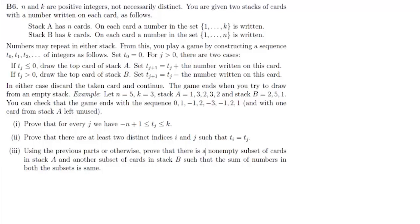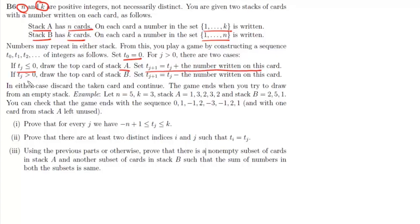Now the sixth question: we have two positive integers n and k, and two stacks — stack A having n cards and stack B having k cards. Stack A has cards from the set 1 to k and stack B has cards from the set 1 to n. T_0 is 0. If T_j is less than or equal to 0, we draw a top card from stack A and T_{j+1} equals T_j plus the number on that card. If T_j is greater than 0, we draw a top card from stack B and T_{j+1} equals T_j minus the number on that card. In either case we discard the taken card and continue.